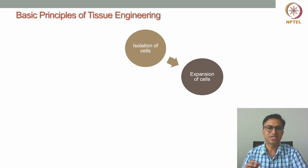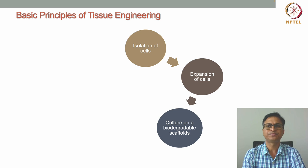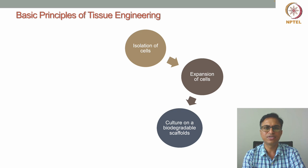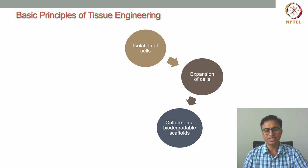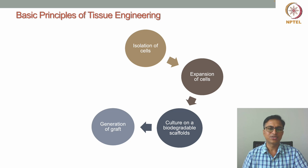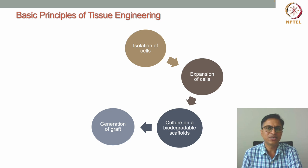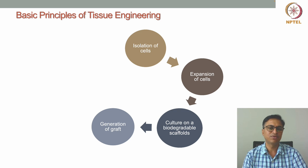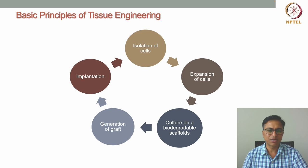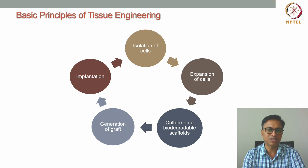When the cell number reaches a sufficient level, we seed the cells on a substrate, also called a scaffold. Different 3D scaffolds are used for cell seeding, and after culturing the cells on the scaffold for a certain time period, the cells further grow in number, migrate within the scaffold structure, and produce or lay down extracellular matrix within the structure, generating the graft. That graft is then implanted at the damaged or diseased tissue site to facilitate tissue regeneration.